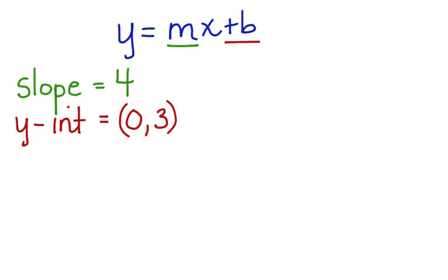Now, if you remember slope-intercept form, you can actually write this equation. The equation of the line is y equals 4x plus 3.